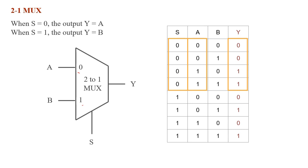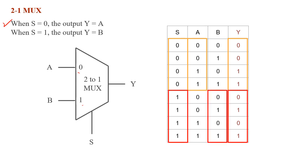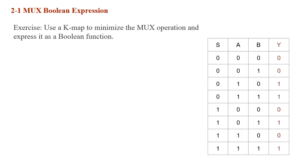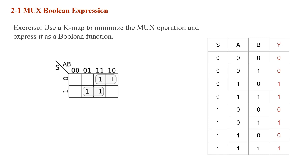When s is 0, y is equal to a. When s is equal to 1, y is going to be equal to b. In this slide we use a K-map to minimize the multiplexer operation and express it as a boolean function. We create a 2x4 K-map, copy the y values into it, group the ones, and end up with the expression: y = (not s) AND a OR s AND b.